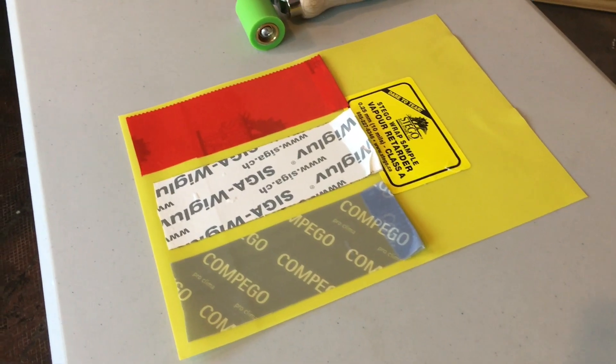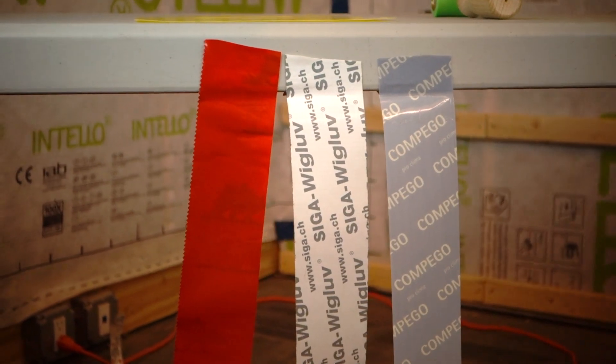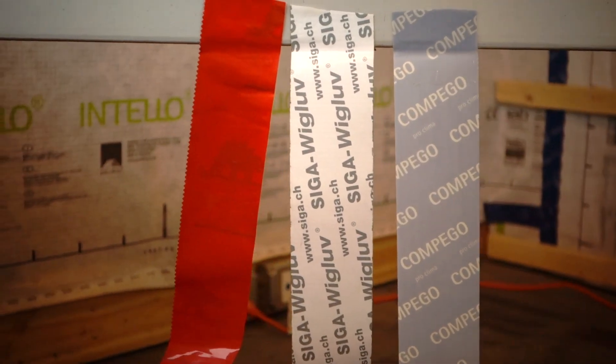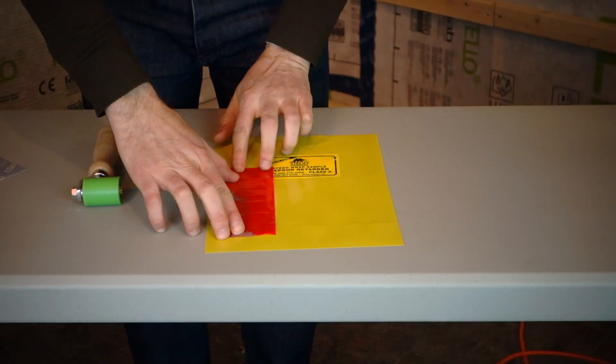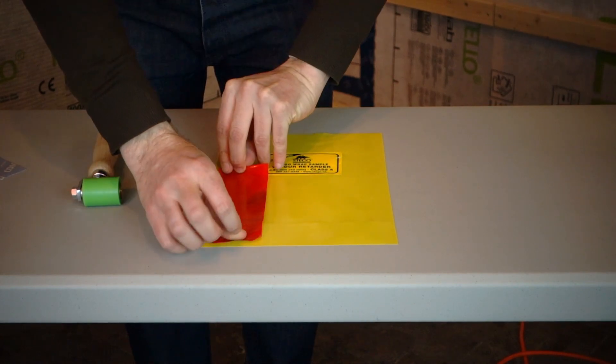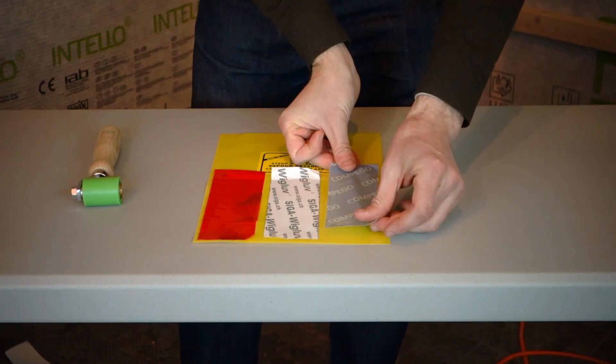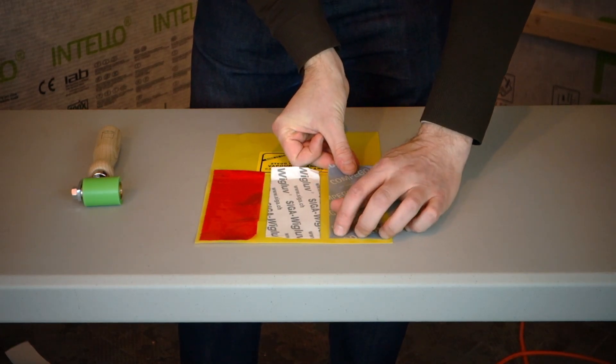To demonstrate Compego's abilities, we tested its adhesion on a leading sub-slab vapor barrier, comparing Compego with two other tape brands. Each tape was folded at the end to give us a tape surface to grab onto later. Then we used a roller to apply sufficient pressure to each tape on the vapor barrier.